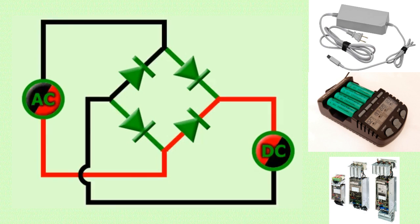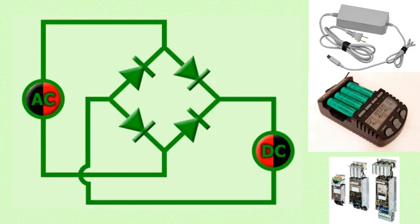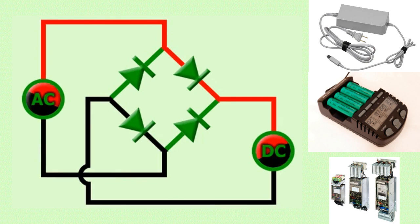Each diode is a two-terminal device that allows current to flow in only one direction. During each half cycle of the AC input, two of the diodes conduct and the other two are reverse biased.